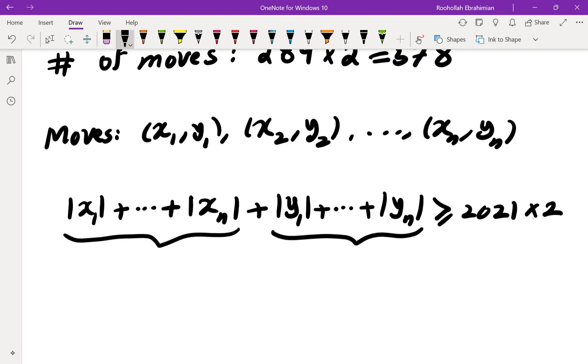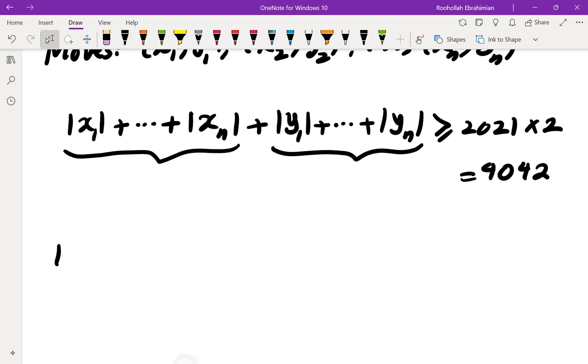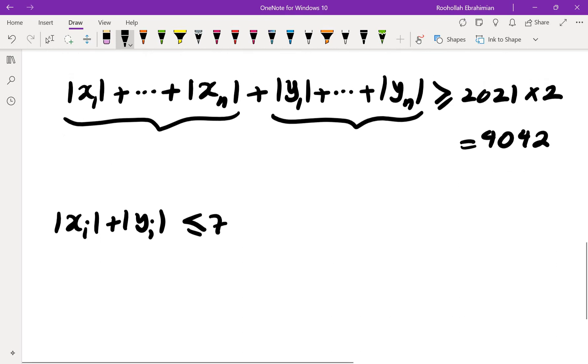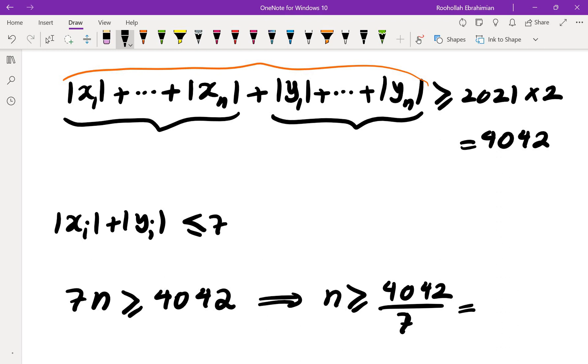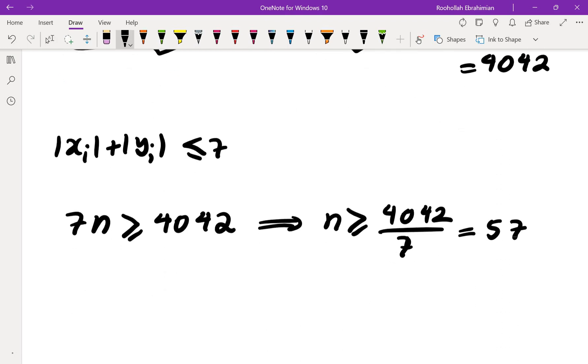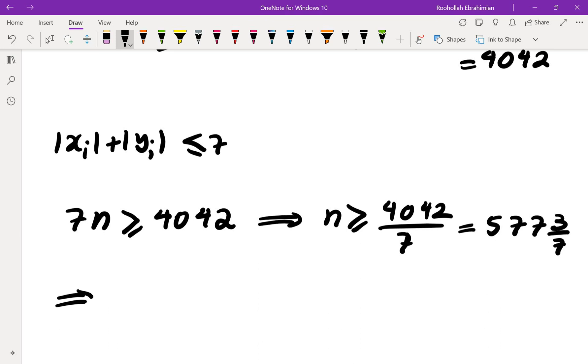So the total number of moves is 4042. Now each move that we made, |xᵢ| + |yᵢ|, is either 0 + 5, 5 + 0, or 3 + 4, 4 + 3, so this is at most 7. Combining these, we get that 7n is greater than or equal to 4042, because this sum does not exceed 7n. If we divide by 7, we get n ≥ 4042/7, which gives us 577 and 3/7.